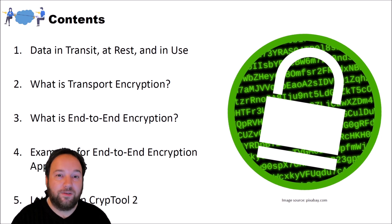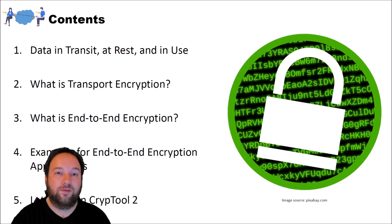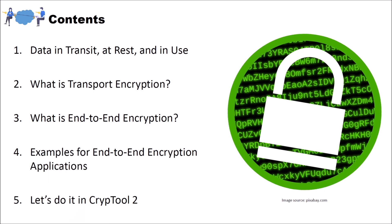In this video, we will discuss what the term end-to-end encryption actually means. We structure this video into five different parts. In the first part, we will discuss the three states of data: data in transit, data at rest, and data in use.